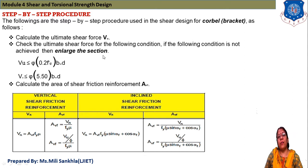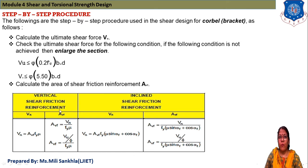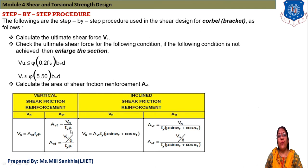If either condition is not satisfied, we enlarge the section. Next, calculate the area of shear friction reinforcement, AVF. For vertical shear friction reinforcement, VN equals the ultimate shear force. The equation is AVF = VN / (Fy × mu), where mu is the friction coefficient.